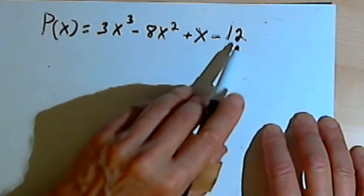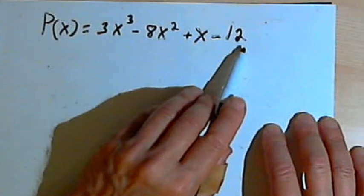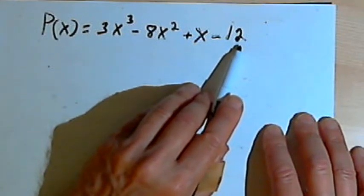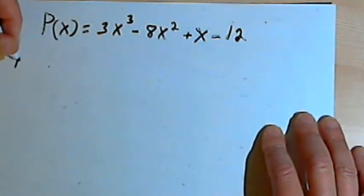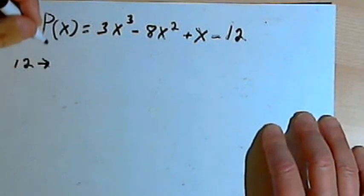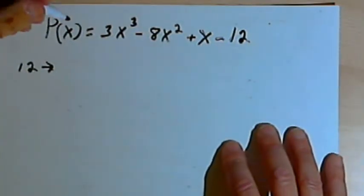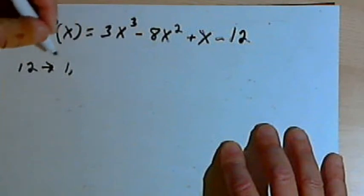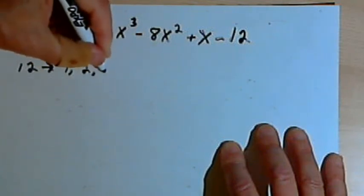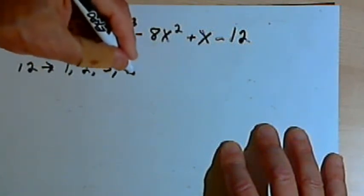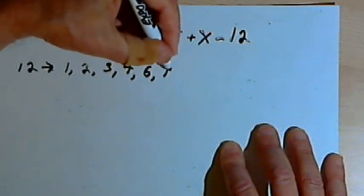It says take the last number in this polynomial, in other words, take the constant, and write down all of the factors of that constant. So the factors of 12 would be 1, 2, 3, 4, 6, and 12.